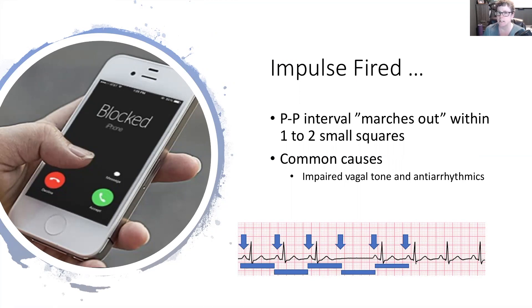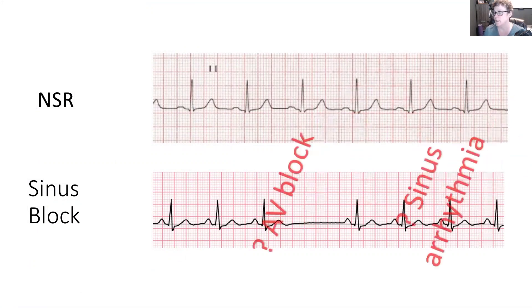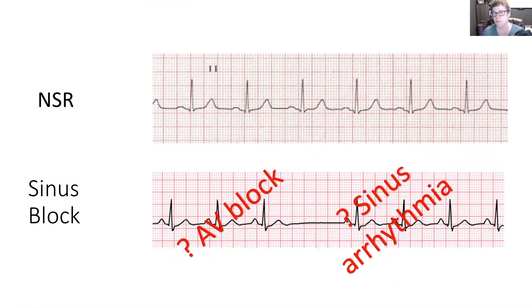Likening this to the sandbag analogy: the guy tossed the sandbag but it was a weak toss and it failed — next one's coming, be ready. When we compare this to normal sinus rhythm, you can see quite obviously that there is a long pause that would not be seen in normal sinus rhythm. However, if we don't do our analysis we don't know what we have — this could be a sinus arrhythmia, an AV block, or a ventricular block — so let's look at this in more detail.